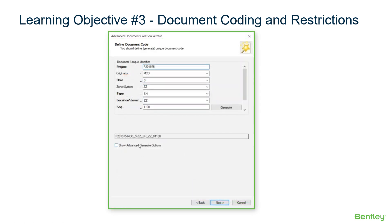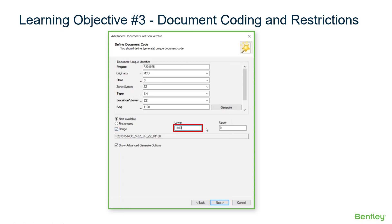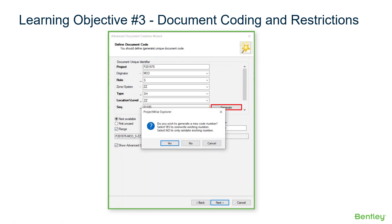This allows the ProjectWise administrator the ability to reserve specific serial numbers for specific document codes. This video clip shows the behavior the wizard presents to the user when a code violation occurs.